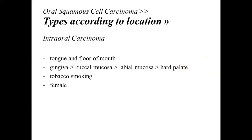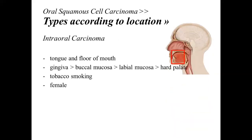Second, we have intraoral carcinoma. It usually occurs on the tongue and floor of the mouth. It can also occur on the gingiva, buccal mucosa, labial mucosa, and hard palate. The main suspect is tobacco smoking, and because of the increasing trend of cigarette use among women, intraoral carcinoma is also becoming more common in females.